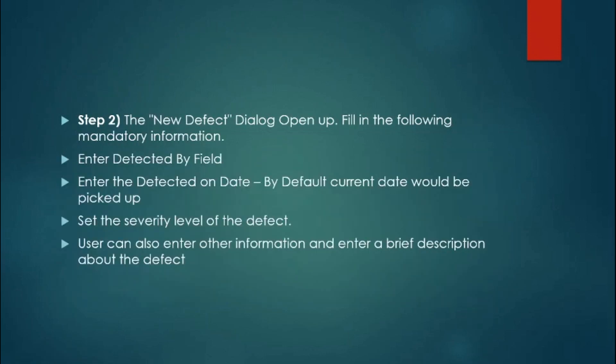To create a defect in HPLM, navigate to the defect tab and click the 'New Defect' button. A new defect dialog box will appear where you must enter all mandatory fields: detected by, detected on date, severity, and priority. Severity is the impact on the application or business, and priority is the urgency of fixing that defect. I have a detailed video on severity and priority — the link will be in the description.